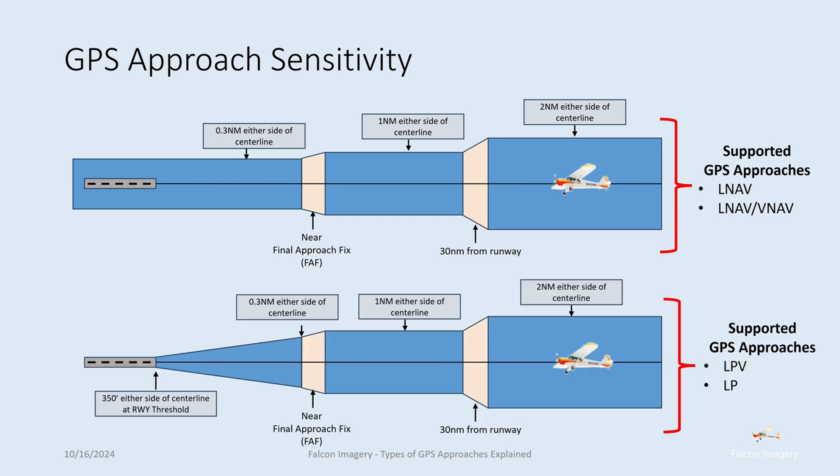Looking at the next figure, we see a tapering toward the runway in terms of sensitivity. Beyond 30 nautical miles, it's two nautical miles either side of the centerline. Within 30 nautical miles, sensitivity increases to one nautical mile either side. Near the approach fix, it goes from 0.3 nautical miles and continues to shrink all the way down to 350 feet either side of the centerline at the runway threshold. These sensitivity characteristics apply to LPV and LP approaches, making them very similar to ILS approaches.